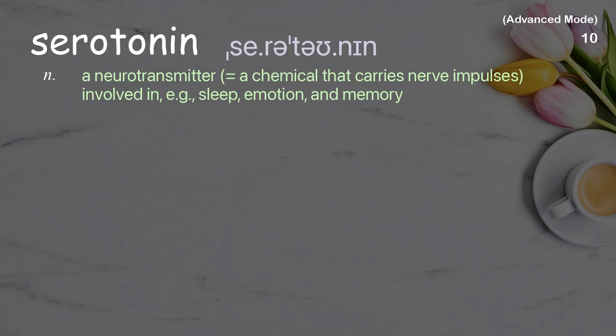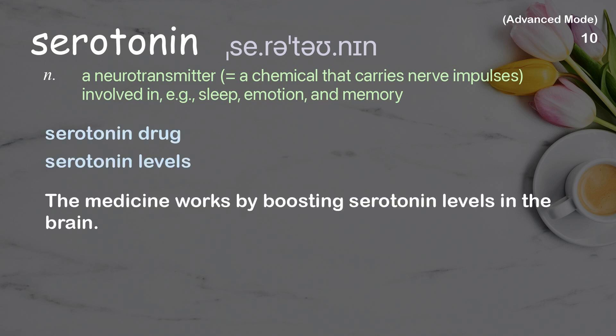Serotonin: a neurotransmitter — a chemical that carries nerve impulses — involved in sleep, emotion, and memory. Examples: serotonin drug, serotonin levels. The medicine works by boosting serotonin levels in the brain.